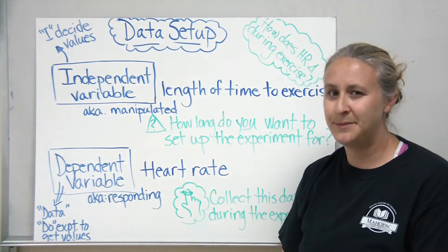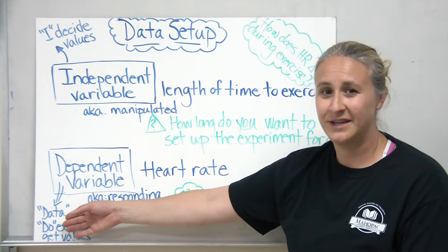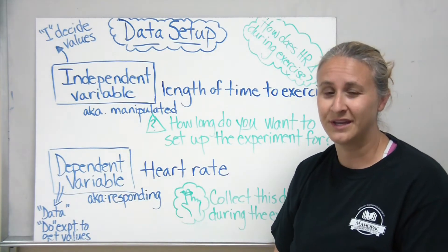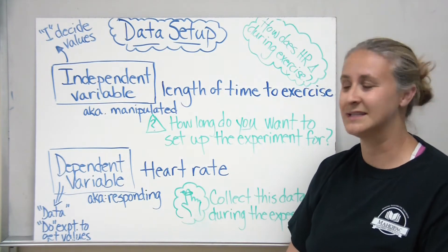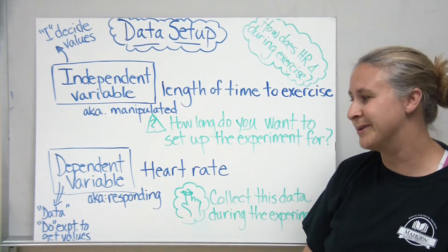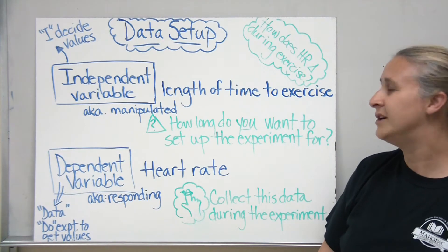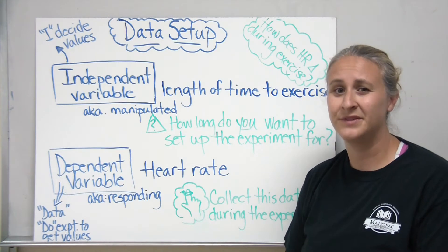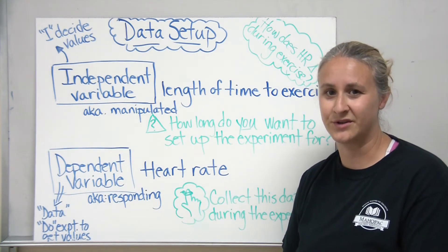The other variable is the dependent variable. I like to look at the D in the dependent variable. That's our data. That's our data we're recording during the experiment. You can also think this is what I'm going to do during the experiment. This is the data I'm collecting. Some people like to call this the responding variable. In our example that we used for how heart rate changes during exercise, our heart rate would be the dependent variable. This is the one we don't know before the experiment starts.